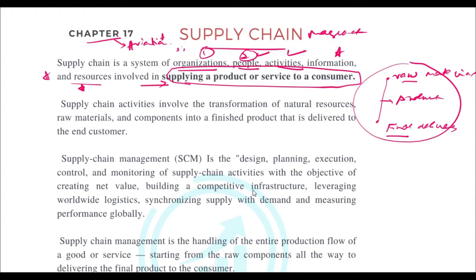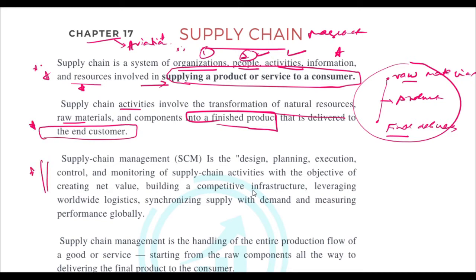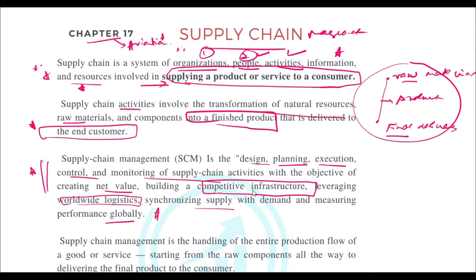The activities involve the transformation of natural resources and raw materials into a finished product that is delivered to the end customer. The formal management definition is: the design, planning, execution, control, and monitoring of supply chain activities with the objective of creating net value, building competitive infrastructure, leveraging worldwide logistics, synchronizing supply with demand, and measuring performance globally.